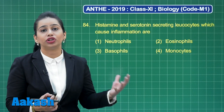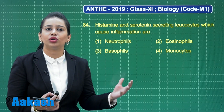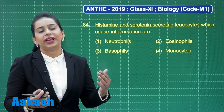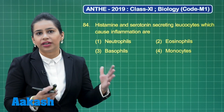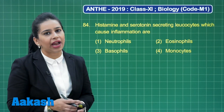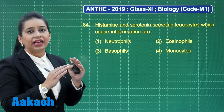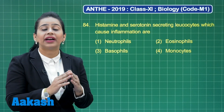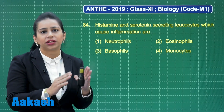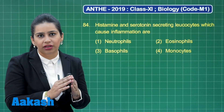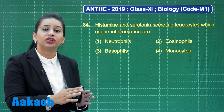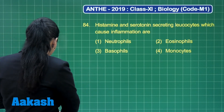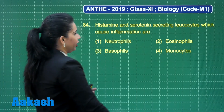Granulocytes are further of 3 types: neutrophils, eosinophils, and basophils. Agranulocytes are of 2 types: lymphocytes and monocytes. The cells of blood which act like the mast cells of connective tissue and secrete histamine, heparin, and serotonin are basophils.